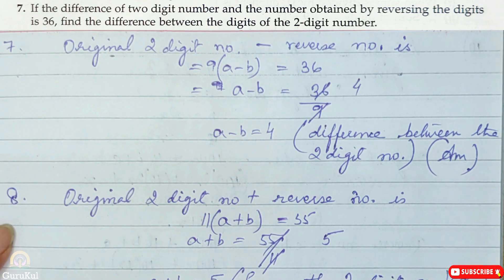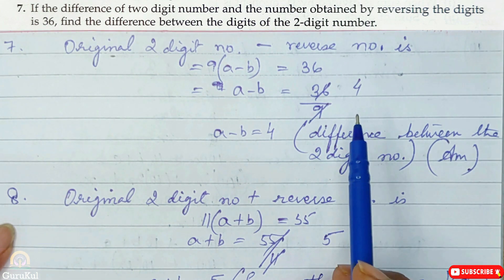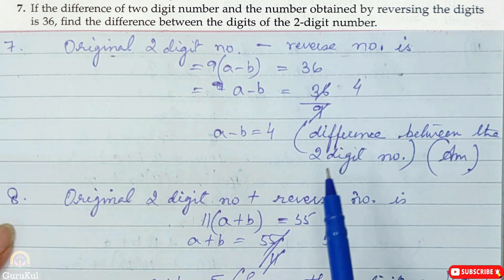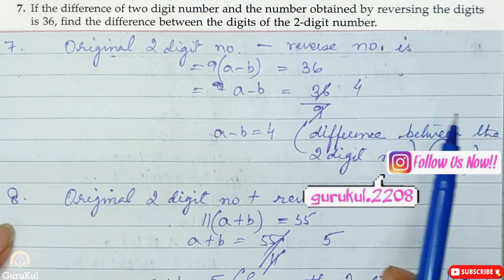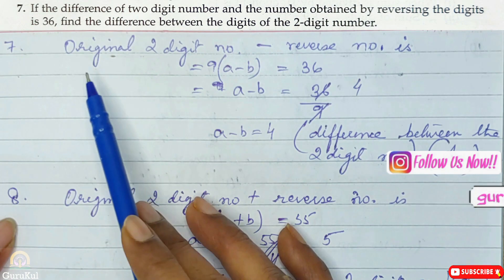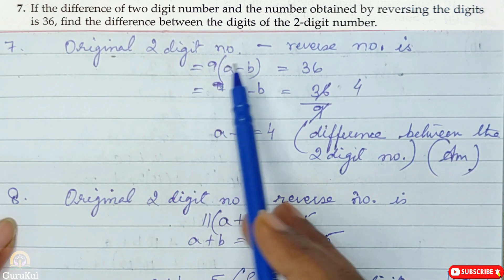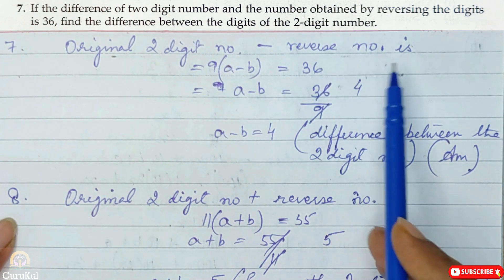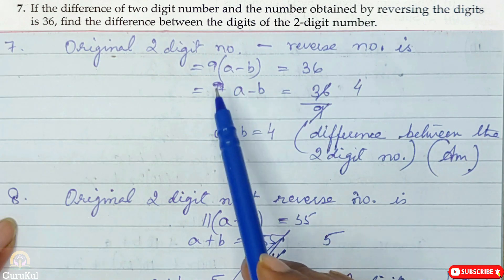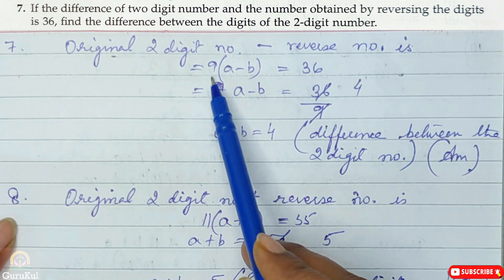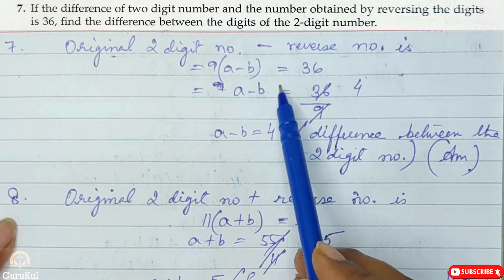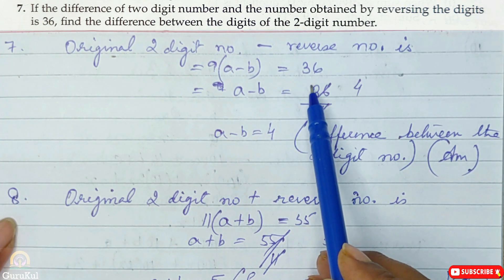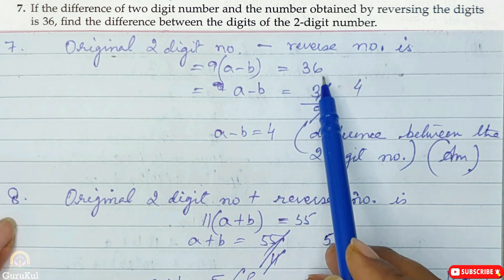Question number 7: the difference of a two-digit number and the number obtained by reversing the digits is 36. According to the property, the original two-digit number minus the reverse number equals 9(A minus B), which is equal to 36.